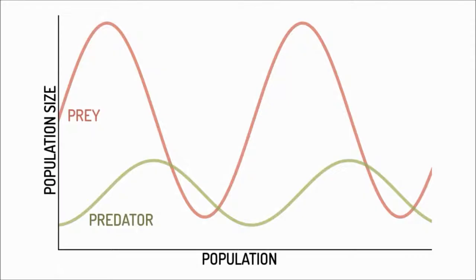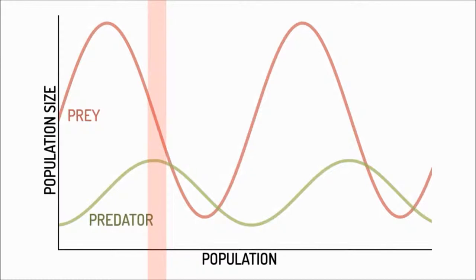Predator and prey populations are dependent on each other, and that's what this graph shows. Notice that the predator population is usually smaller than the prey population. Starting where the prey population is at its highest: the predators have lots of food, so they survive long enough to reproduce and raise offspring, so predator populations increase and prey populations decrease. The predators become so numerous they're competing with each other — intraspecies competition. There are fewer prey, so the predator population starts to drop. As the predator population drops, the prey are not being hunted as much, so their numbers start to recover, and on and on it goes.